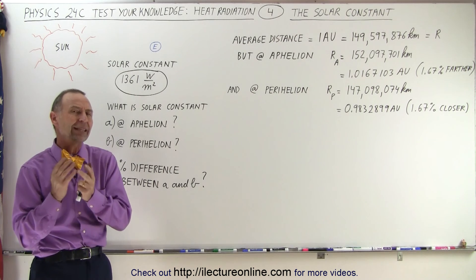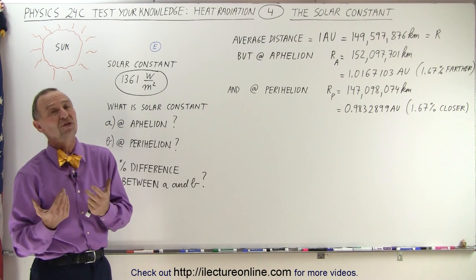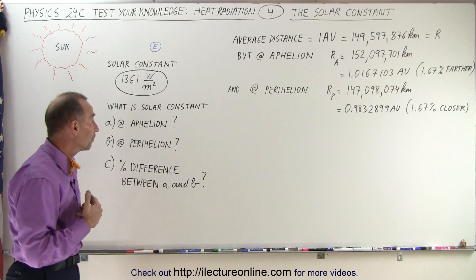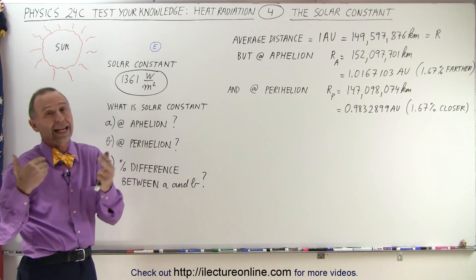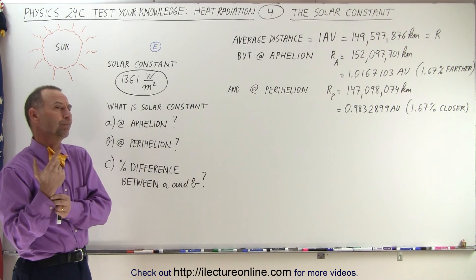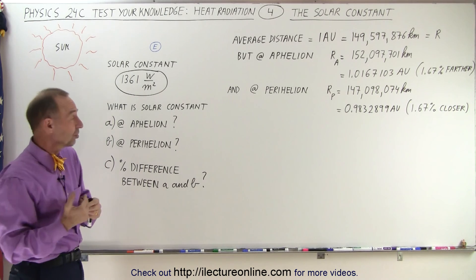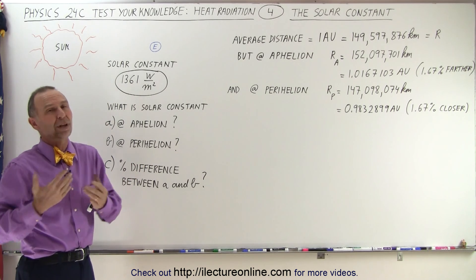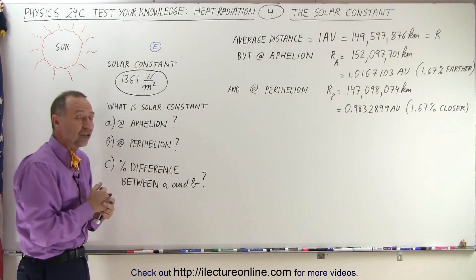But is it always the case that we're receiving that kind of energy at the surface of the earth? The answer is no, because sometimes the earth is closer to the sun and sometimes it's farther away. At aphelion, where the earth is farther away from the sun, that occurs in our summertime, meaning we're farther away in summer — cooler summers. At perihelion, we're closer to the sun, and that happens in our wintertime, giving us milder winters.